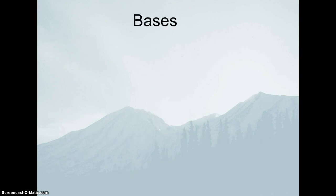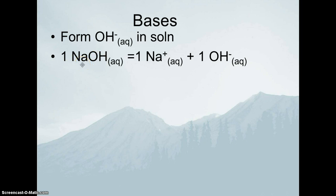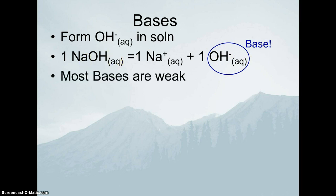Then we have bases, which form hydroxide ion in solution. Sodium hydroxide is a strong base — it's in our list of strong bases, and as a sodium species we know it completely dissociates. Sodium hydroxide dissociates into sodium ion and hydroxide ion. The fact that there is a hydroxide ion in solution is what defines sodium hydroxide as a base.